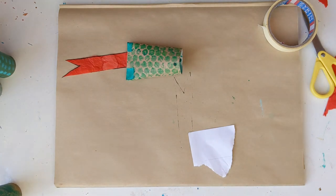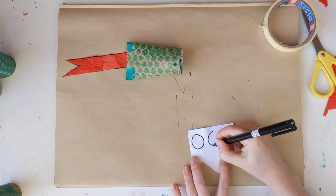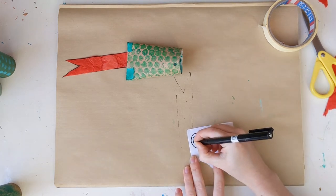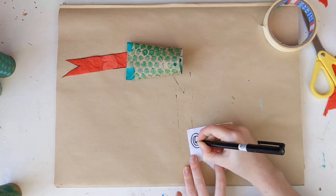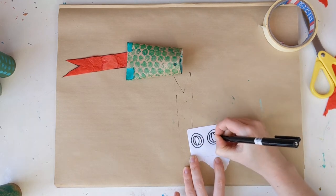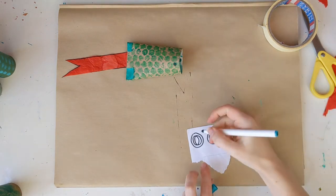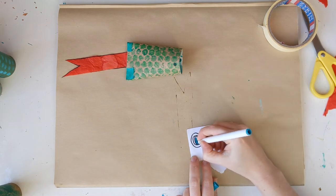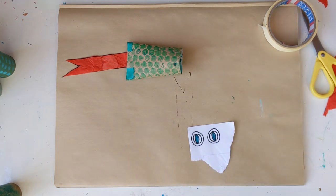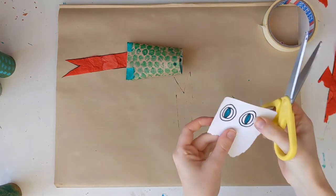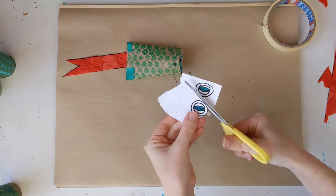Now the snake needs some eyes so I have some paper and a pen and I'm going to draw two large eyes for our snake like this. Then I'll cut them out, and using a pritt stick I will glue them onto the head of the snake.